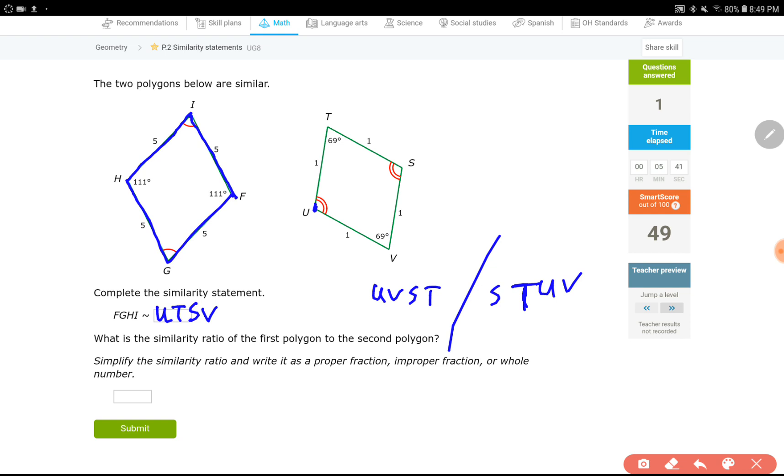What's the similarity ratio of the first to the second polygon? So, similarity ratio, it's not scale factor. It's all about find two numbers that correspond to each other and then divide them. Five to one. Five to one means just five. Because you can divide five by one, the answer is going to be five.